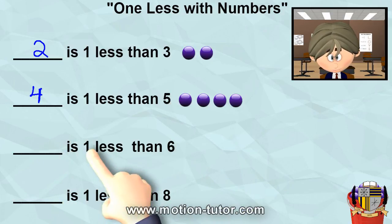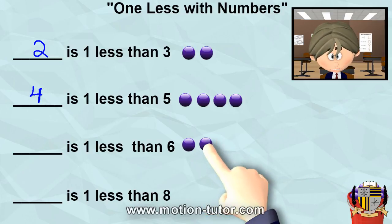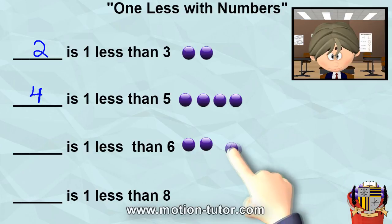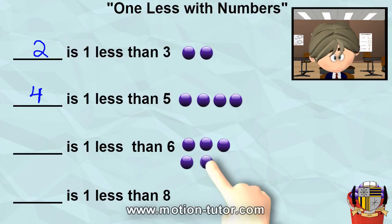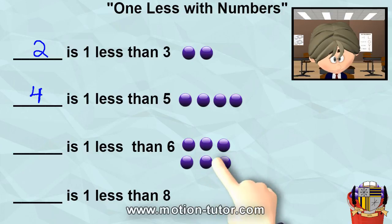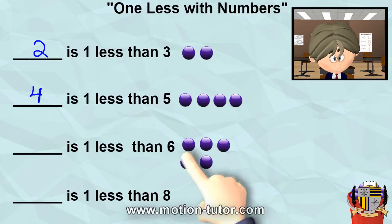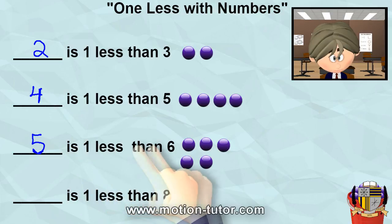Something is one less than six. Let's figure out what that thing is. I'm going to pull out six from the bucket. So that's six. Something is one less than six — let's see how one less than six looks. It's going to look like this. So it's one, two, three, four, five. That means five is one less than six.